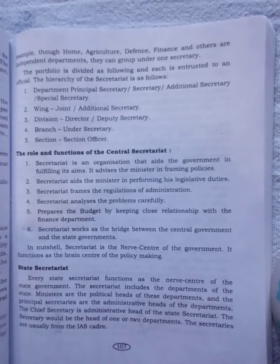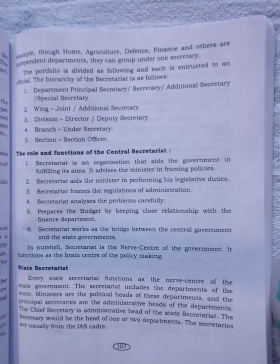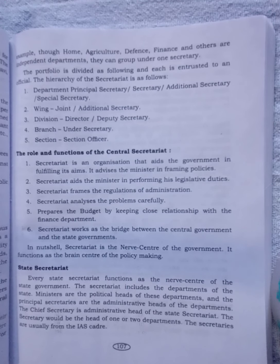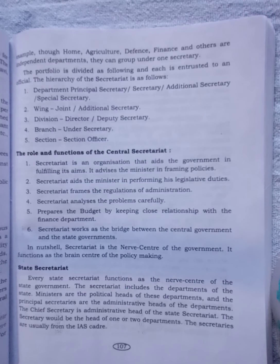Hierarchy means a system or organization that has many levels from the lowest to the highest. According to the hierarchy, it is divided as follows: Department — Principal Secretary, Secretary, Additional Secretary, or Special Secretary. Wing — Joint Secretary or Additional Secretary. Division — Director or Deputy Director. Branch — Under Secretary. Section — Under Secretary.